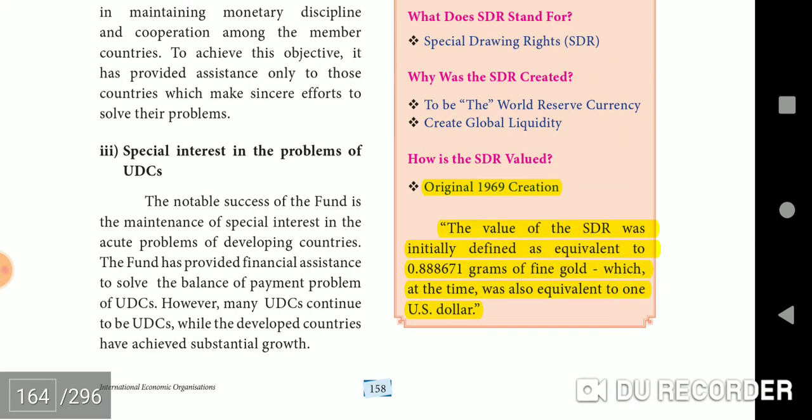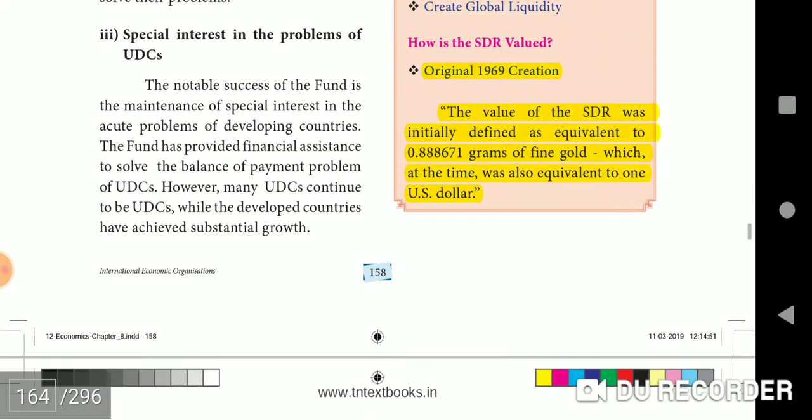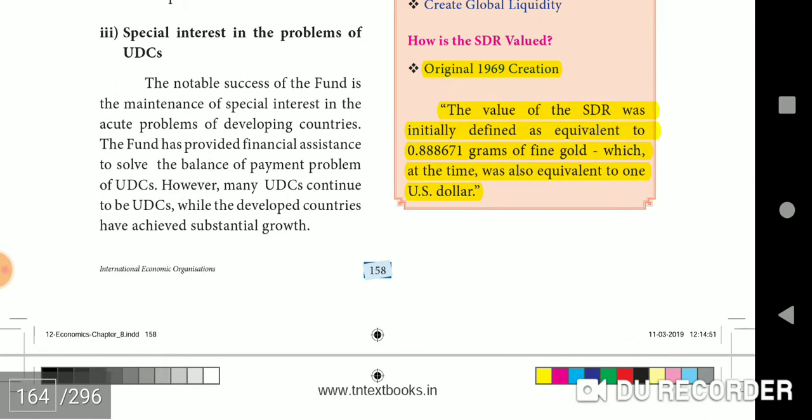Original 1969 Creation: The value of the SDR was initially defined as equivalent to 0.888671 grams of fine gold, which at the time was also equivalent to 1 US dollar.